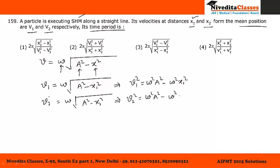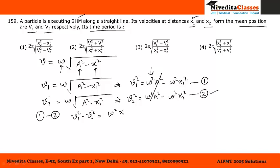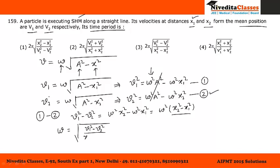We get two equations (one for each position). Subtracting equation 2 from equation 1: V1-squared minus V2-squared equals omega-squared X2-squared minus omega-squared X1-squared, which gives omega-squared times (X2-squared minus X1-squared). Rearranging: omega equals the square root of (V1-squared minus V2-squared) divided by (X2-squared minus X1-squared).